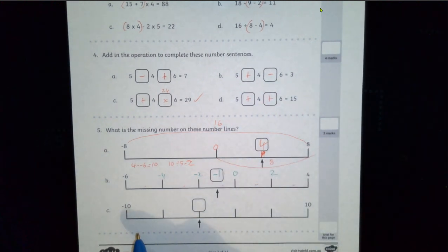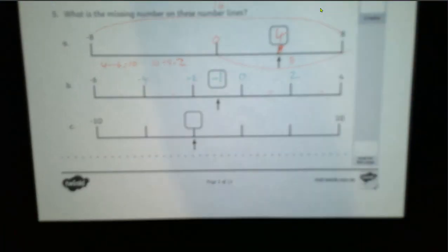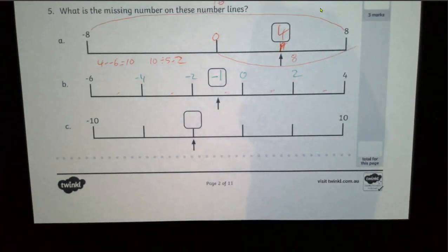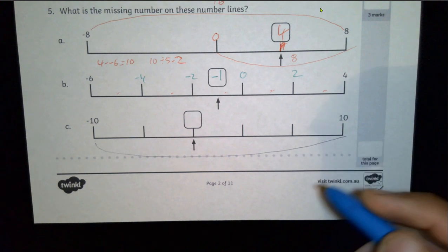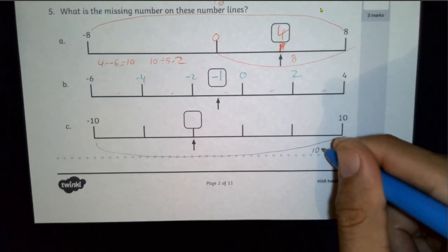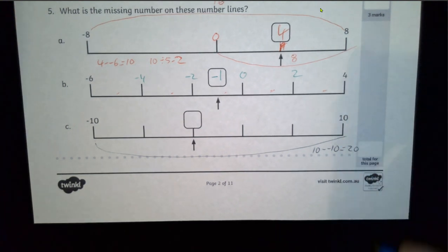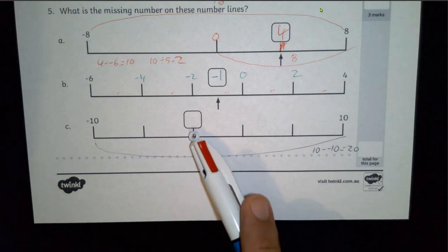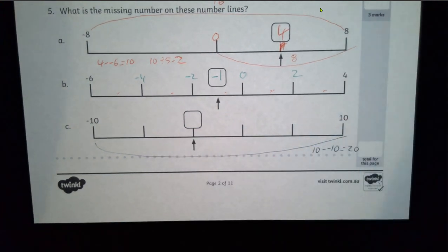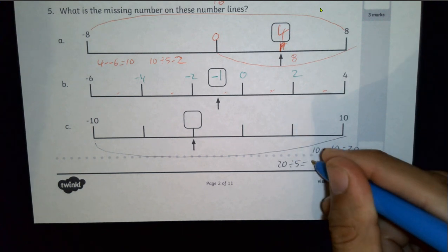Now let's use the same logic for the bottom one there. The span from minus 10 to 10, if I did 10 minus minus 10, which means, of course, plus for the two minuses, you get 20. So we've got a span of 20. And we're going to do 1, 2, 3, 4, 5 jumps. So 20 divided by those five jumps is 4.